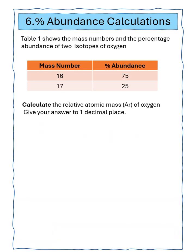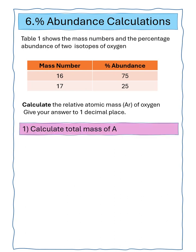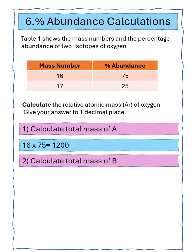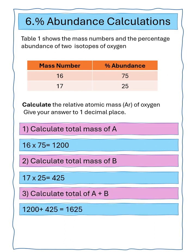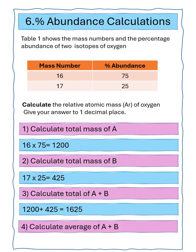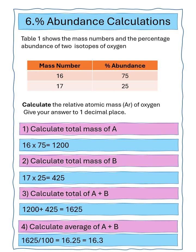Question six says table one shows the mass number and percentage abundance of two isotopes of oxygen. We've got to calculate the relative atomic mass of oxygen, giving our answer to one decimal place. Isotope A: mass 16, percentage abundance 75, total 1200. Isotope B: mass number 17, abundance 25, total 425. Adding those two numbers together gives a total mass of 1625. Dividing by 100 gives 16.25, or 16.3 to one decimal place.